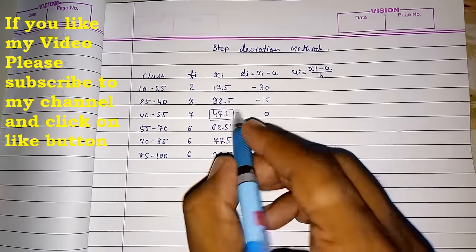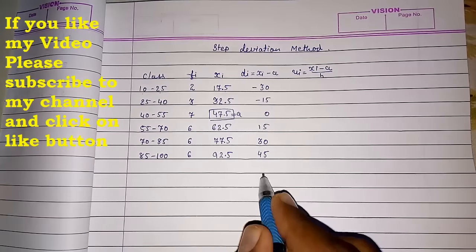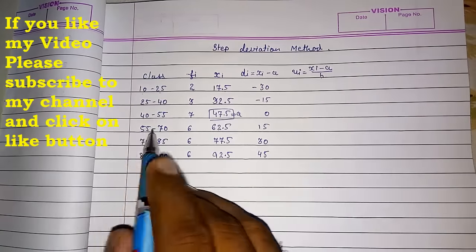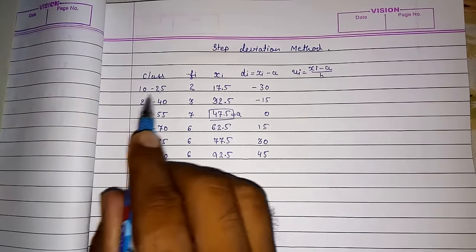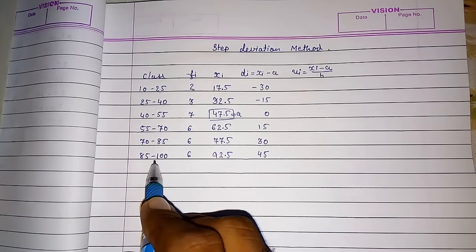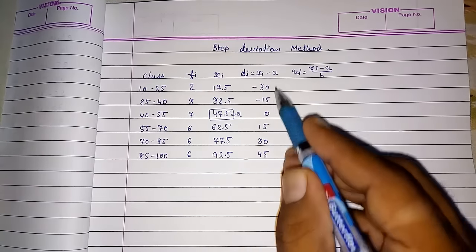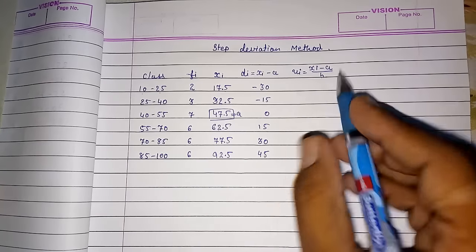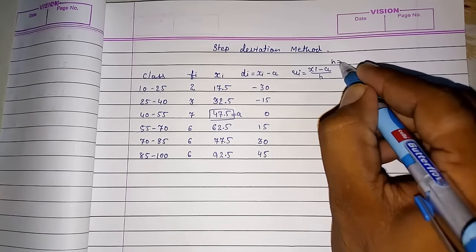h means a we had suppose this and we had subtracted h means this gap. You can say the class interval between this new number. So we can easily see the class interval is 15 or here also you can say the interval is 15. So we have to suppose h is equal to 15.